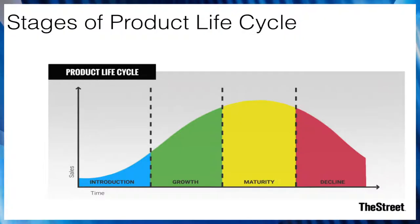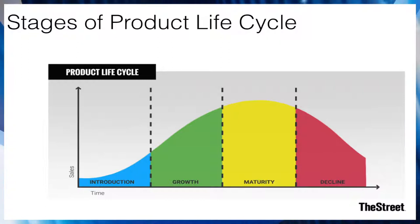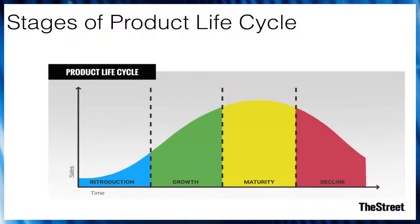In this diagram, I have shown the different stages of the product life cycle. First, the product is introduced in the market, then it grows, then at a certain point it reaches the maturity stage, and then slowly it starts declining from the market.